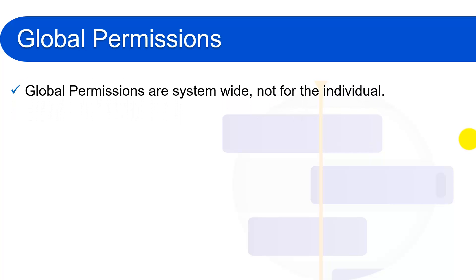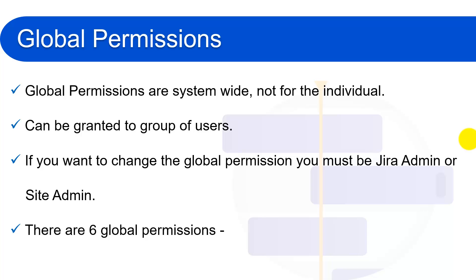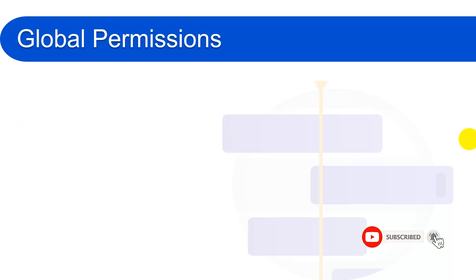Global permissions are system-wide, not for individual users, and we can grant global permissions only to groups of users. If you want to change the global permissions, you must be a Jira admin or a site admin. There are six types of global permissions in Jira Cloud.